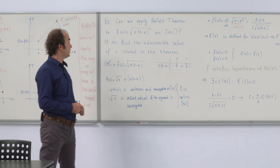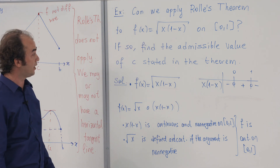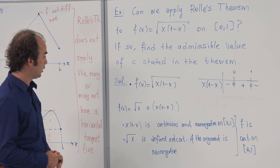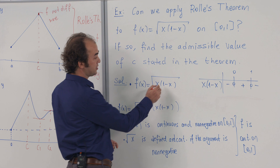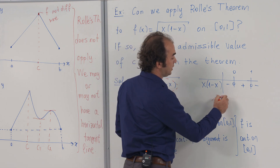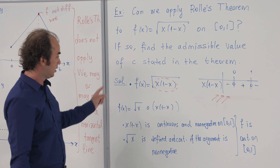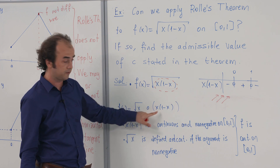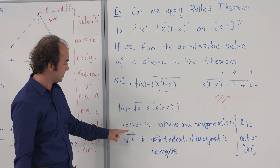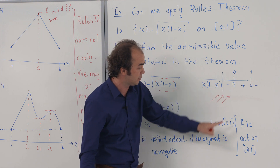Now let's pass to the examples. The question asks: can we apply Rolle's theorem to this function over the closed interval [0, 1], and if so, find the admissible value of c. The function is f(x) = √(x(1−x)). First, I analyze the sign of x(1−x) in a table and observe that it is non-negative over the closed interval [0, 1]. I write f as the composition of root x with x(1−x): since x(1−x) is a polynomial, it is continuous and non-negative over [0, 1].